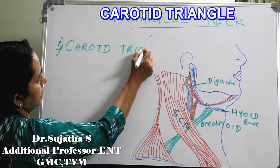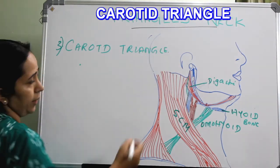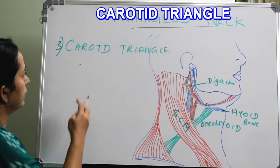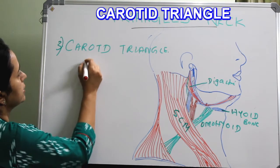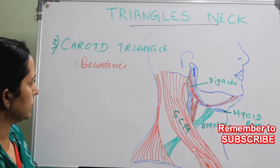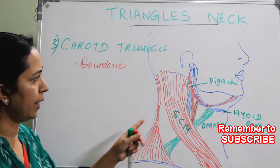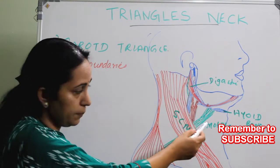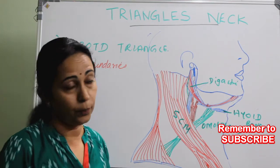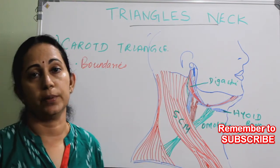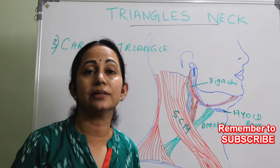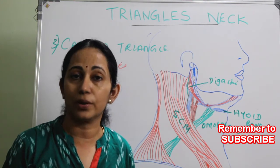The carotid triangle — what are its boundaries? The boundaries are formed by the digastric posterior belly, the superior belly of omohyoid, and the sternocleidomastoid. This is a scalene triangle, meaning all three sides are not equal.